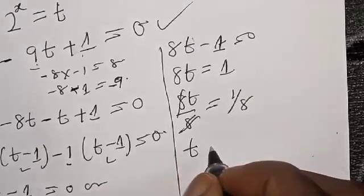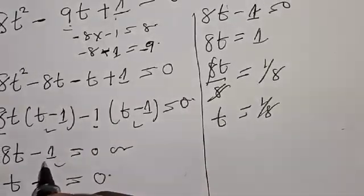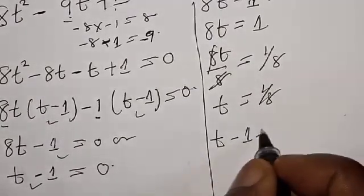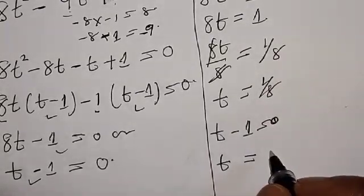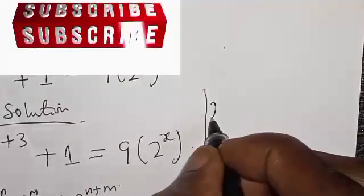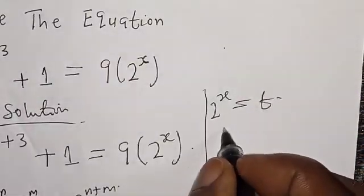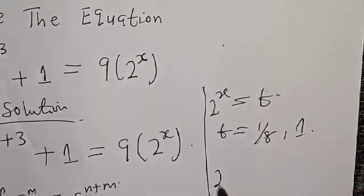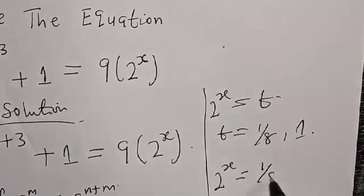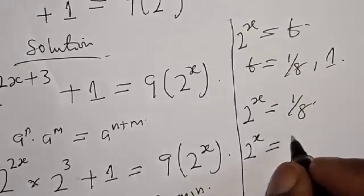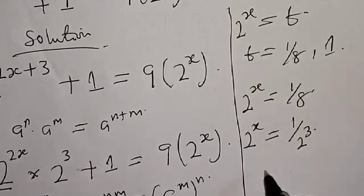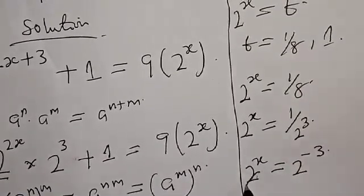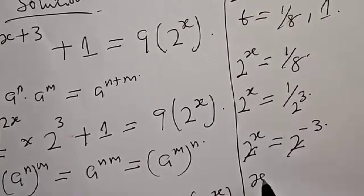Also from the other factor, t minus 1 equals 0, so t equals 1. Remember we said 2 raised to power s equals t. For t equals 1 over 8: 1 over 8 is 1 over 2 raised to power 3, which equals 2 raised to power minus 3. So 2 raised to power s equals 2 raised to power minus 3. Since they have the same base, s equals minus 3.